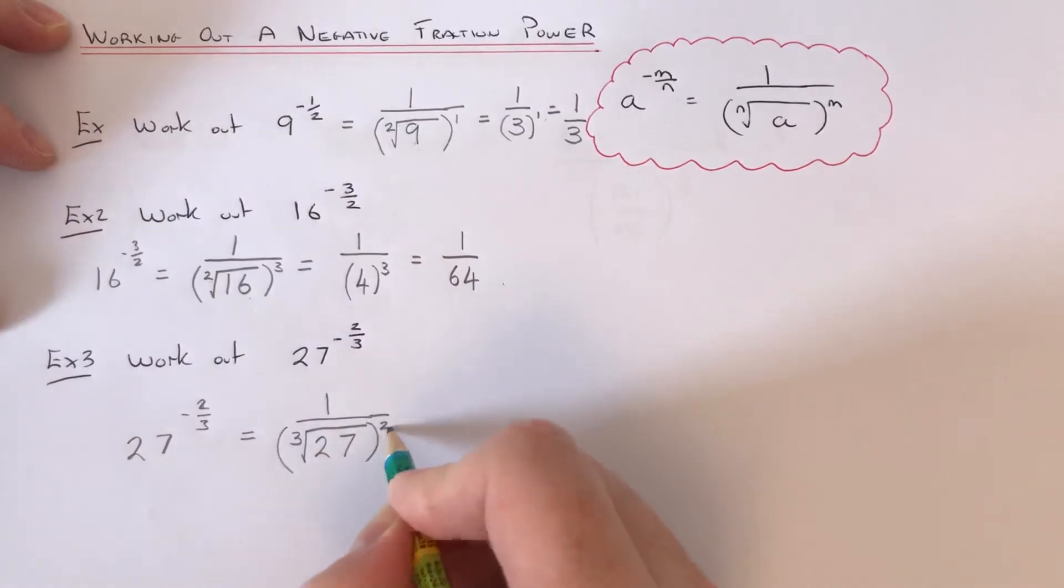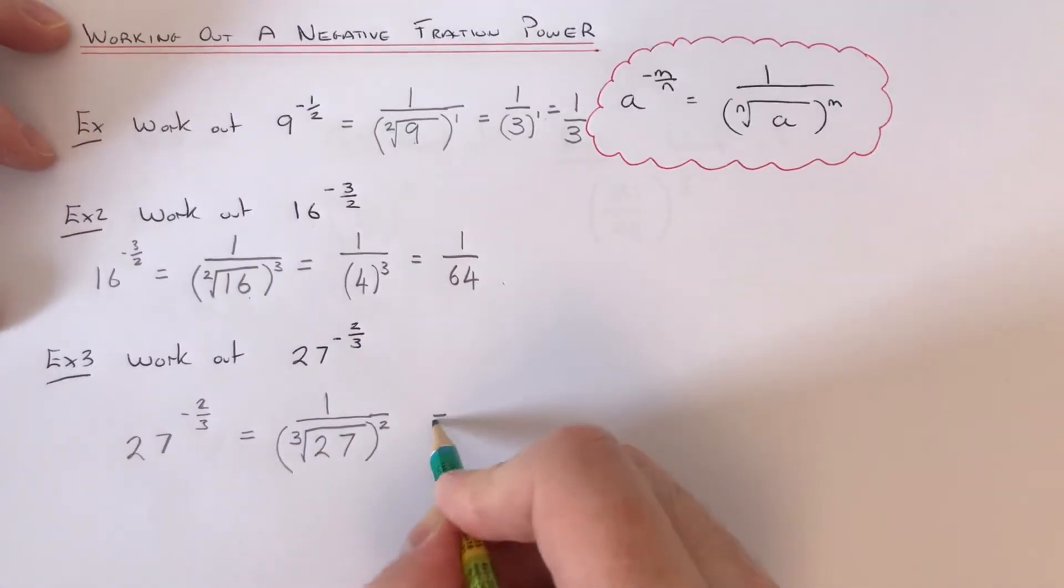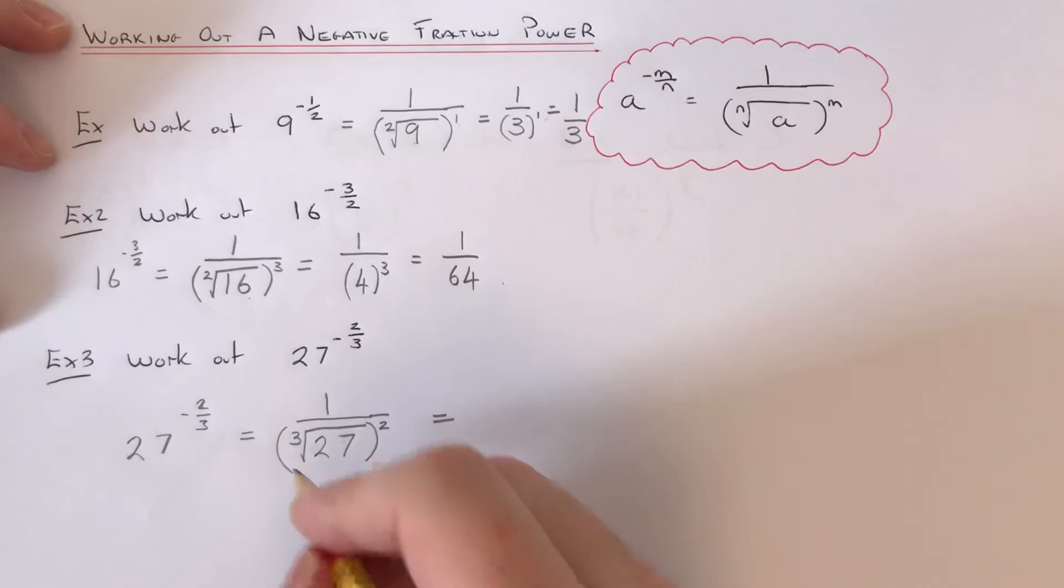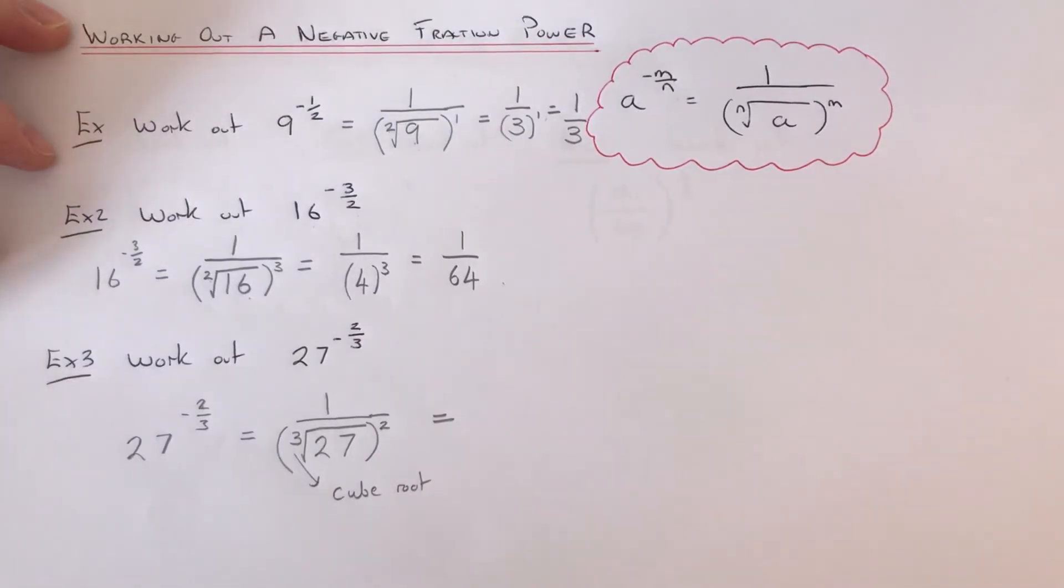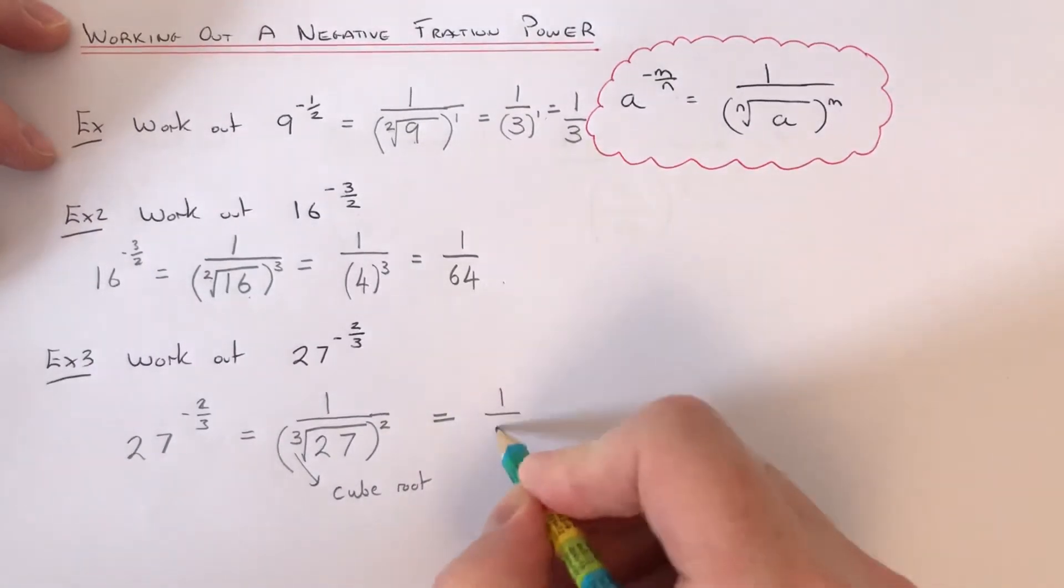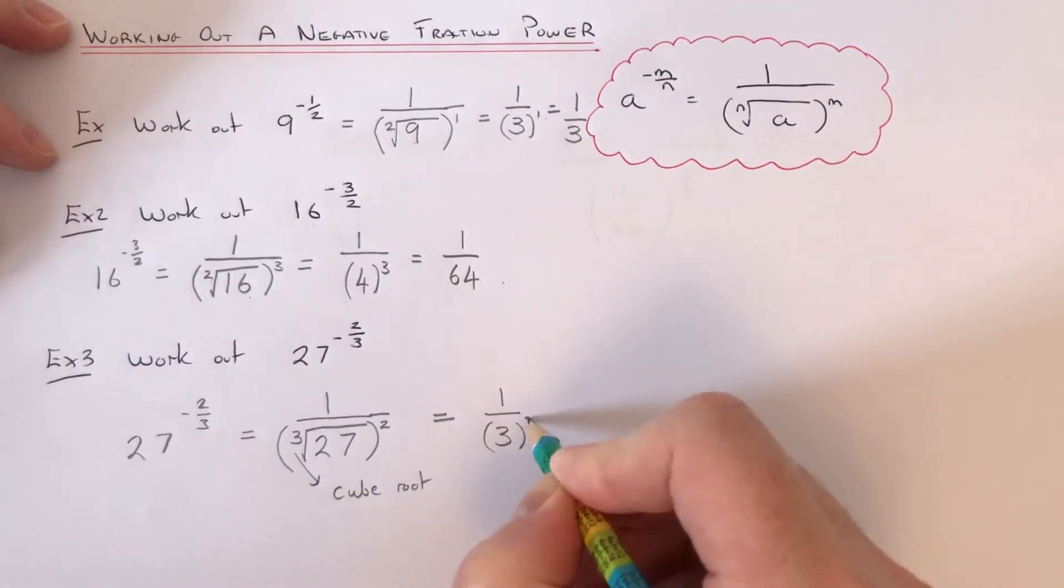So again, this time we've got a 3 on the root. That means the cube root of 27. The cube root of 27 is 3 because 3 times 3 times 3 is 27. So we've got 1 over 3 squared.